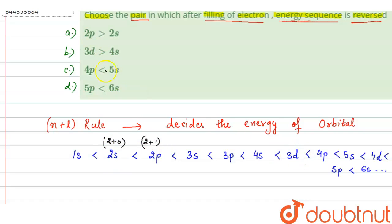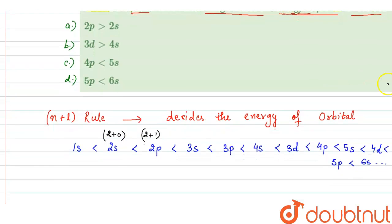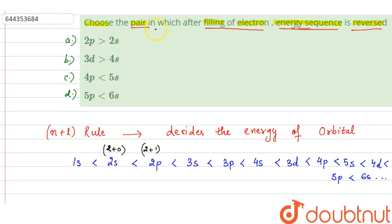This is the order before filling of electrons. After filling of electrons, the energy of 2P remains greater than 2S. So, the energy sequence will not be reversed in 2P and 2S. Option A is incorrect.